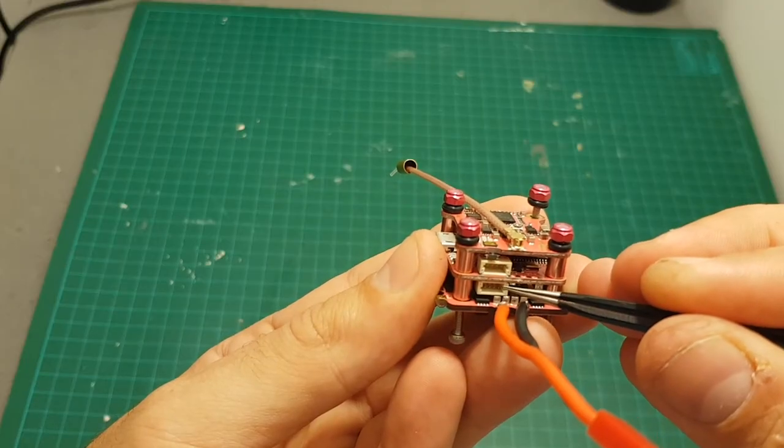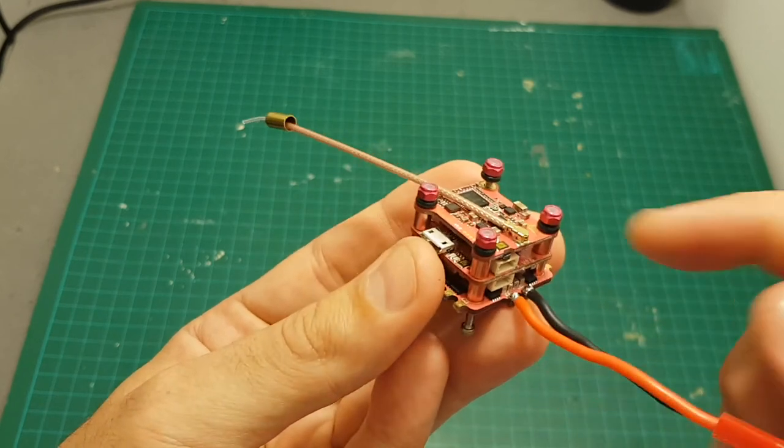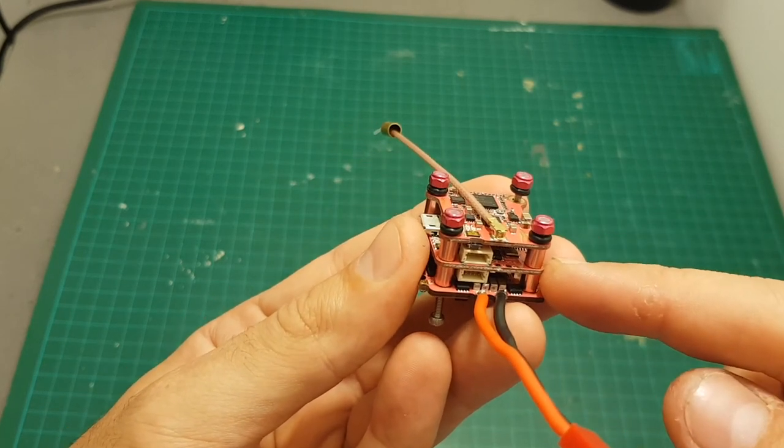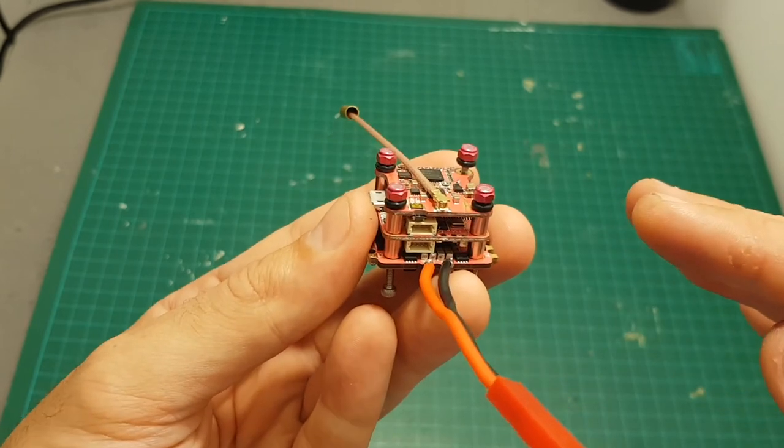The bottom connector is the LED and the buzzer connector. They didn't include a built-in buzzer in this flight controller which I think maybe they should have considered it.